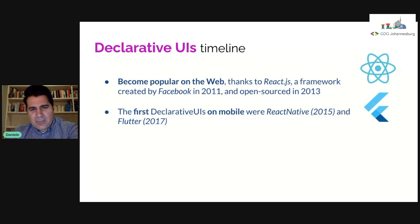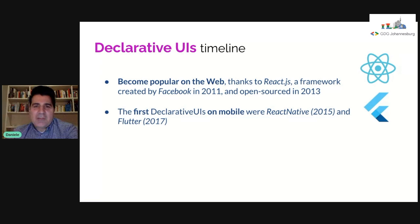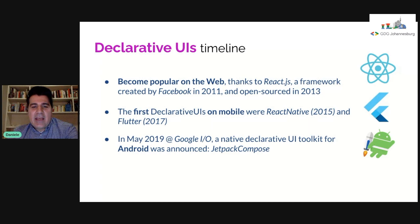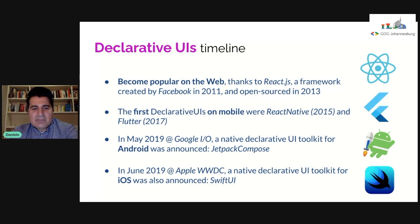Flutter was really the UI toolkit that showed how declarative UIs made sense on mobile for the first time. Thanks to Flutter's success, the two main mobile frameworks also decided to have their own declarative UIs. Google presented Jetpack Compose as experimental in May 2019, and then Apple presented SwiftUI in June 2019 as the declarative UI for iOS. We are now almost two years later and Jetpack Compose is going to be 1.0 by the end of this year.